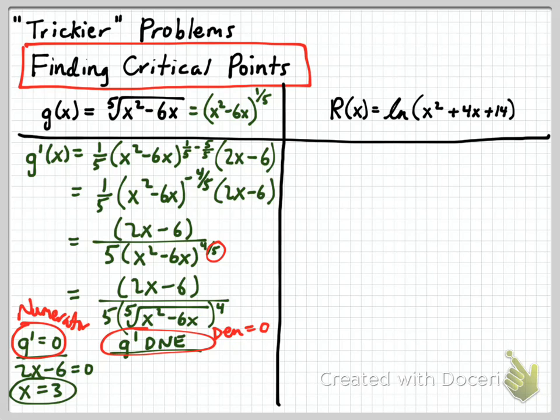And so this denominator is equal to 0 when x squared minus 6x is equal to 0. And if we factor out an x, we can see that clearly when x is equal to 0 and when x is equal to 6. So we have three critical points. We have x equals 0, x equals 6, and x equals 3. Those are our three critical points for that function.